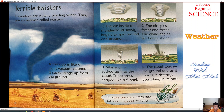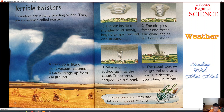Next part, we will learn about terrible twisters. A tornado is like a giant vacuum cleaner — it sucks things up from the ground. First, the air inside the thundercloud begins to spin around and around. The air spins faster and faster and the clouds begin to change shape. Warm air is sucked up into the cloud and it becomes shaped like a funnel. The cloud touches the ground and as it moves, it destroys everything in its path. Twisters can sometimes suck fish and frogs out of ponds.